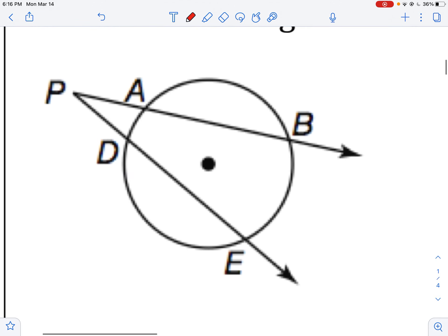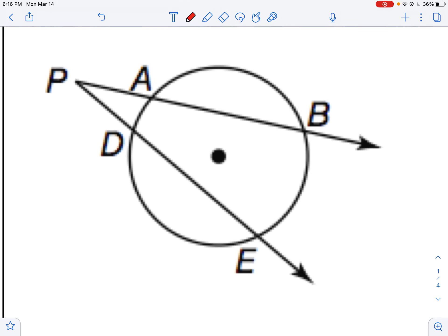If they intersect outside a circle, so let's say this is 100 degrees and 40 degrees, what I would do then is I would subtract. So if they intersect inside, you add. If they intersect outside, you would subtract and then divide by 2 to find out what that angle measure is.